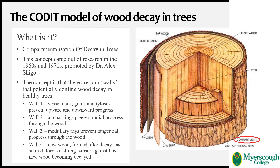Wall three in this model is functioning medullary rays, which act to slow or prevent decay spreading tangentially in the wood. I would note that this is only meaningful for living rays. Where rays have died further into the stem — in the heartwood of the tree — it has been shown that dead rays are a common pathway taken by wood decay fungi to invade new areas of the wood.